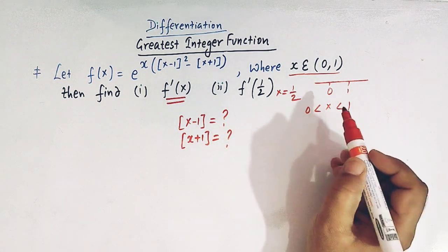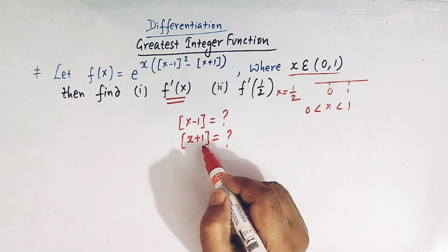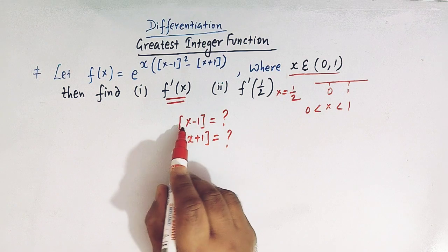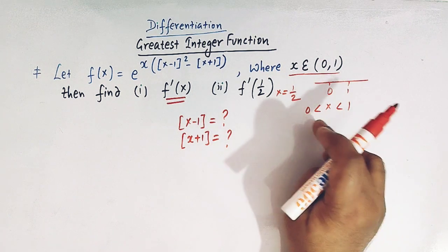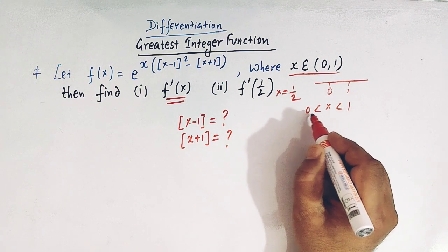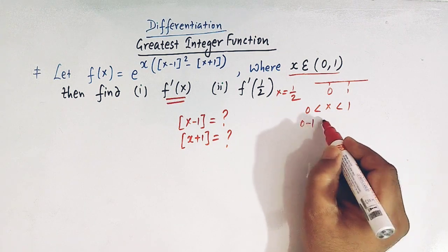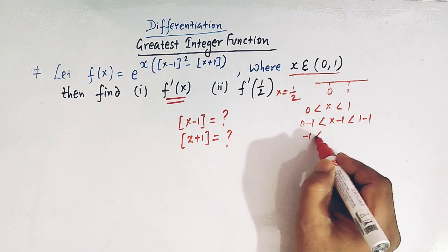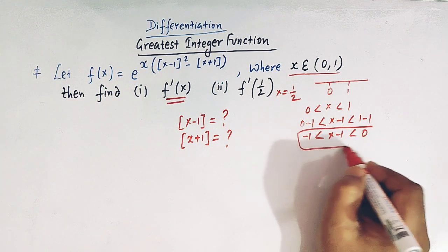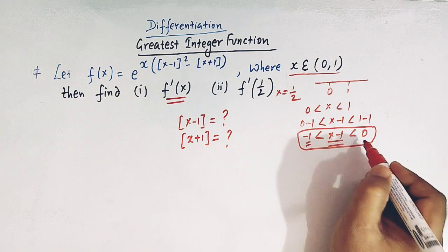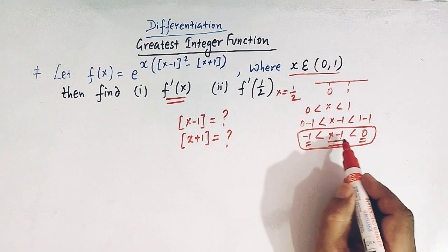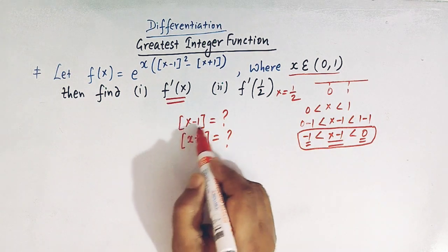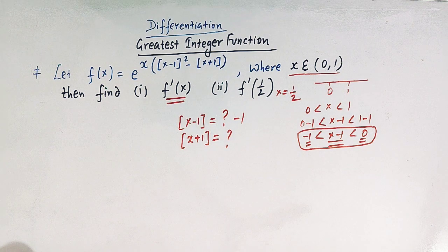Let us see what are the values of greatest integer of x minus 1 and greatest integer of x plus 1. Since x lies between 0 and 1, to get the value of greatest integer of x minus 1, we subtract 1 throughout the inequality. We get minus 1 less than x minus 1 less than 0. So x minus 1 lies between minus 1 and 0. By definition of the greatest integer function, the value of greatest integer of x minus 1 is minus 1.